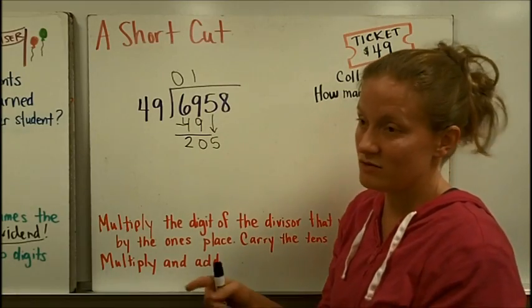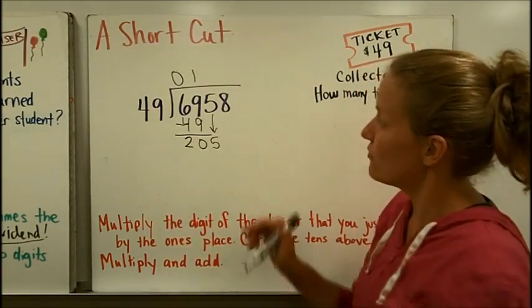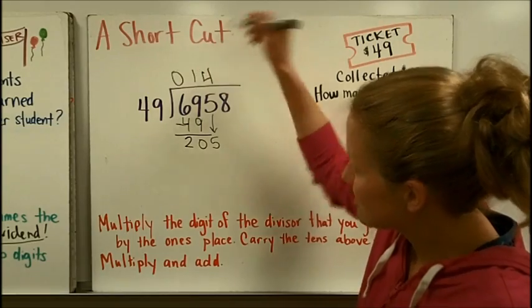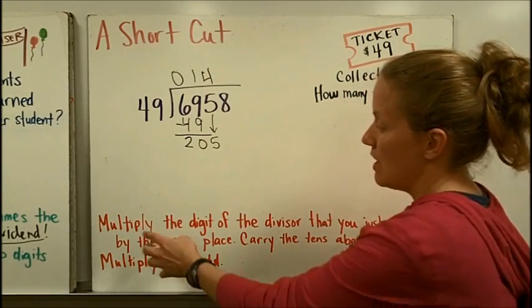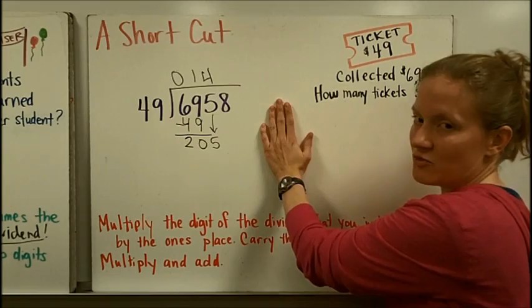Or even just, you could just think $0.50, $100, $150, $200, four times. Now, here's the spot where the shortcut might help you. Instead of going over here and doing 49 times 4...